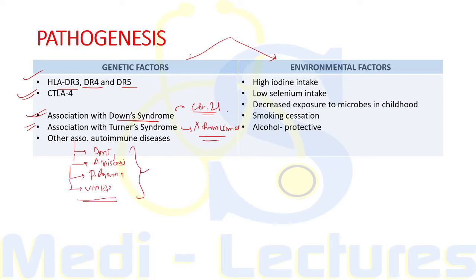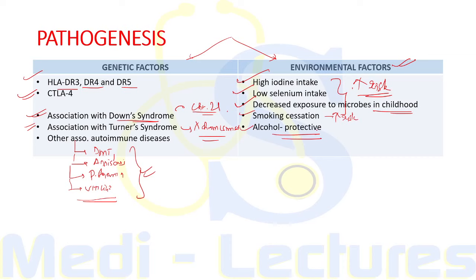Environmental factors in Hashimoto's thyroiditis are poorly defined, but high iodine intake, low selenium intake, and decreased exposure to microbes in childhood have been implicated with higher risk. Smoking cessation transiently increases the risk of development of Hashimoto's, while alcohol is considered a protective factor.